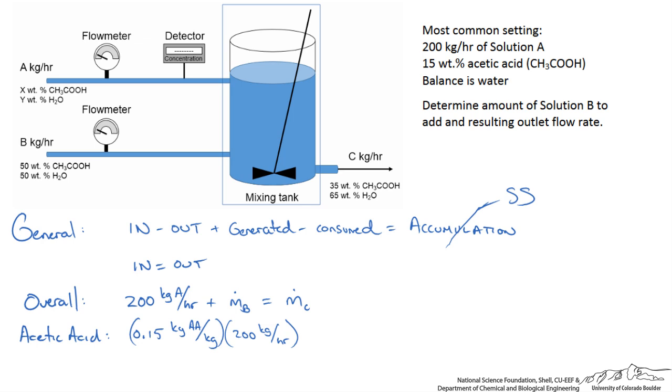We do the same for stream B, but here I have multiplied by our unknown flow rate MB. This equals 35 weight percent times our flow rate of C. So we have two equations and two unknowns: MB and MC.